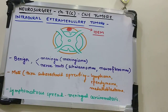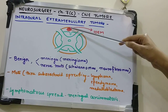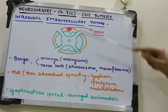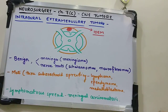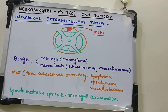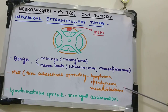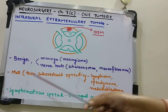Metastatic spread to the IDEM space occurs via subarachnoid seeding through the subarachnoid space between the dura mater and the spinal cord parenchyma. Tumors such as ependymoma, medulloblastoma, and lymphomas — found in or near the ventricles — can cause subarachnoid spreading into this compartment.